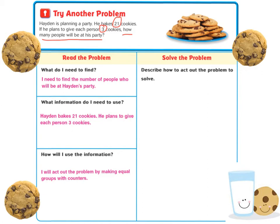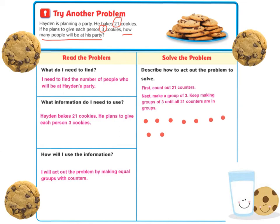Now let's describe how to act out the problem to solve. First, count out 21 counters: 1, 2, 3, 4, 5, 6, 7, 8, 9, 10, 11, 12, 13, 14, 15, 16, 17, 18, 19, 20, 21.